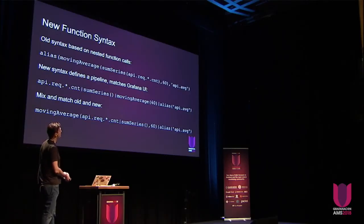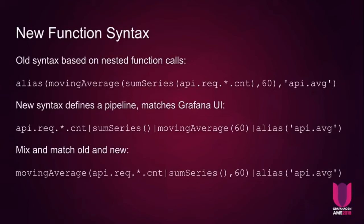We added new function syntax. The old version was really impenetrable. The new syntax matches the Grafana UI — you can take your functions, string them together in a line with pipes, make a pipeline, and your requests will flow through that pipeline and be processed by each function in turn. Exactly how you do things in Grafana — it supports that natively, and supports being able to mix and match nested function calls together with pipe calls.